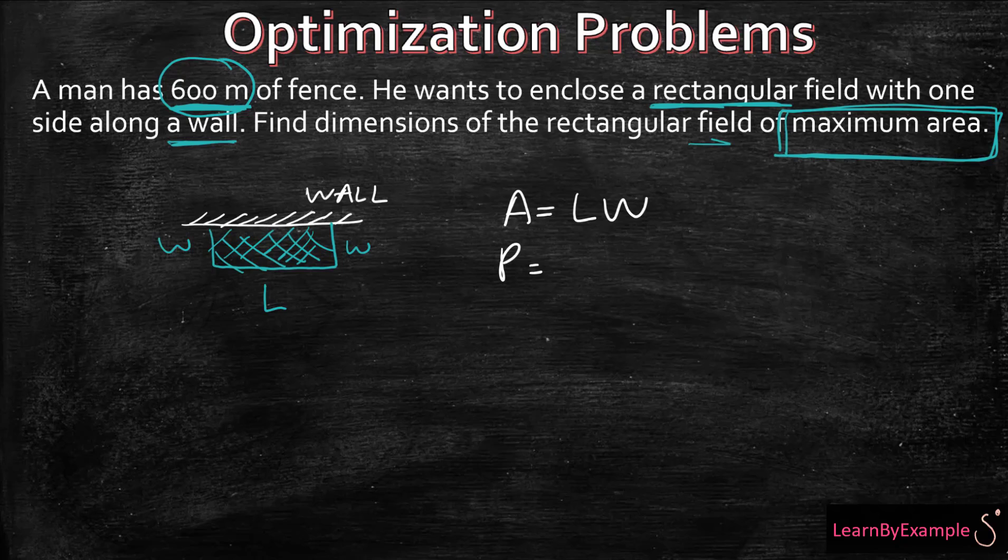It's not going to include the side of the wall. It's just the side where the fence is going to go in. So we have a W plus an L plus a W. So that's 2W plus L is equal to 600 meters.